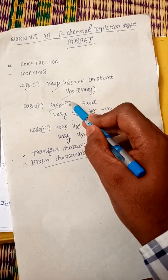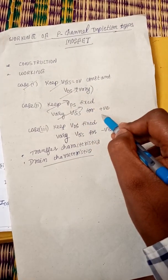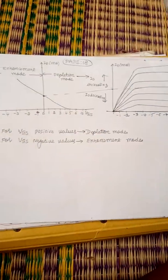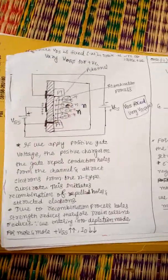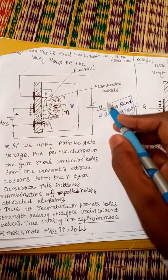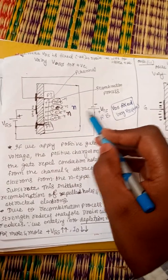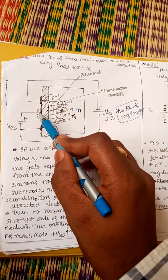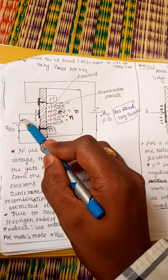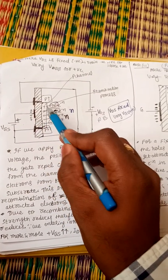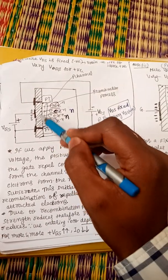Second case: keep VDS fixed and vary Vgs for positive gate values — that is, make gate positive. Similar to the previous diagram, this is reverse bias. Instead of short circuit, you make the gate positive. When gate is made positive, holes will start to accumulate at the gate, but these holes cannot cross the junction because of the SiO2 insulating layer.